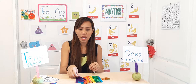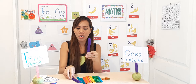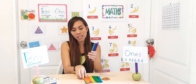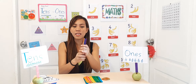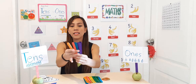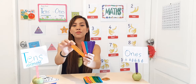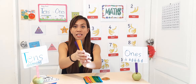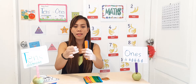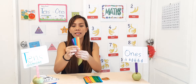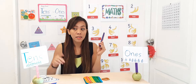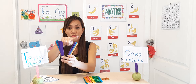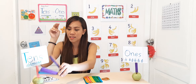Let's count again: 1, 2, 3, 4, 5, 6, 7, 8, 9, 10. Let's tie it — it's a rubber band. This is the second set of ten. Where would I put this? Of course, in tens. So we have two sets of tens now. Let's put it here.